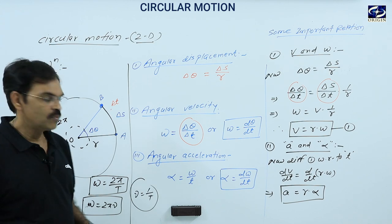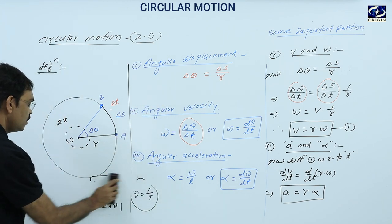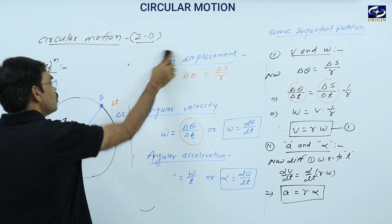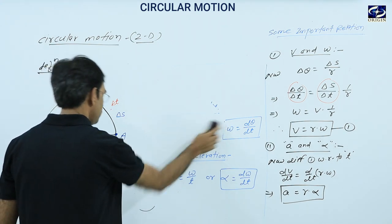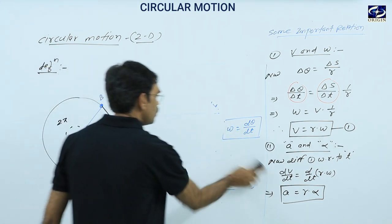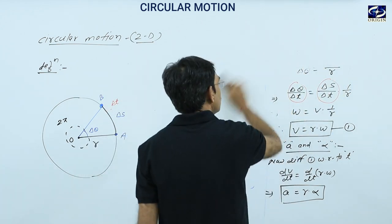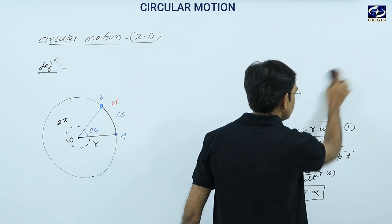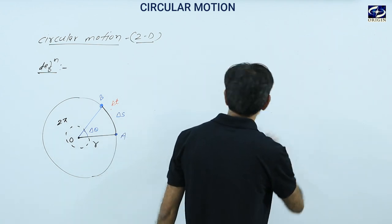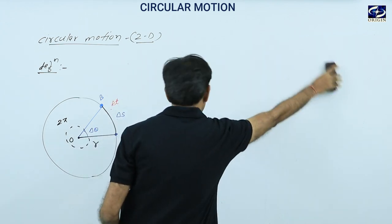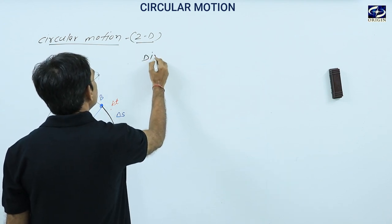Before that, let us clear the concept of the direction of the particle in circular motion. That means when any particle performs circular motion, what is its direction? This is what we need to study: direction of the particle in circular motion.